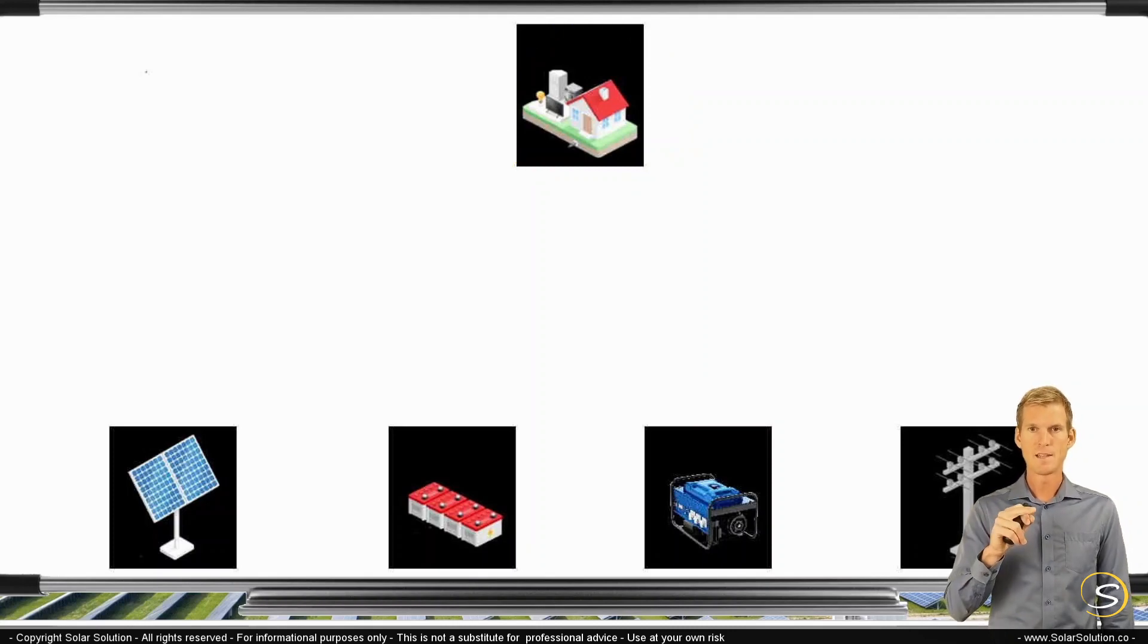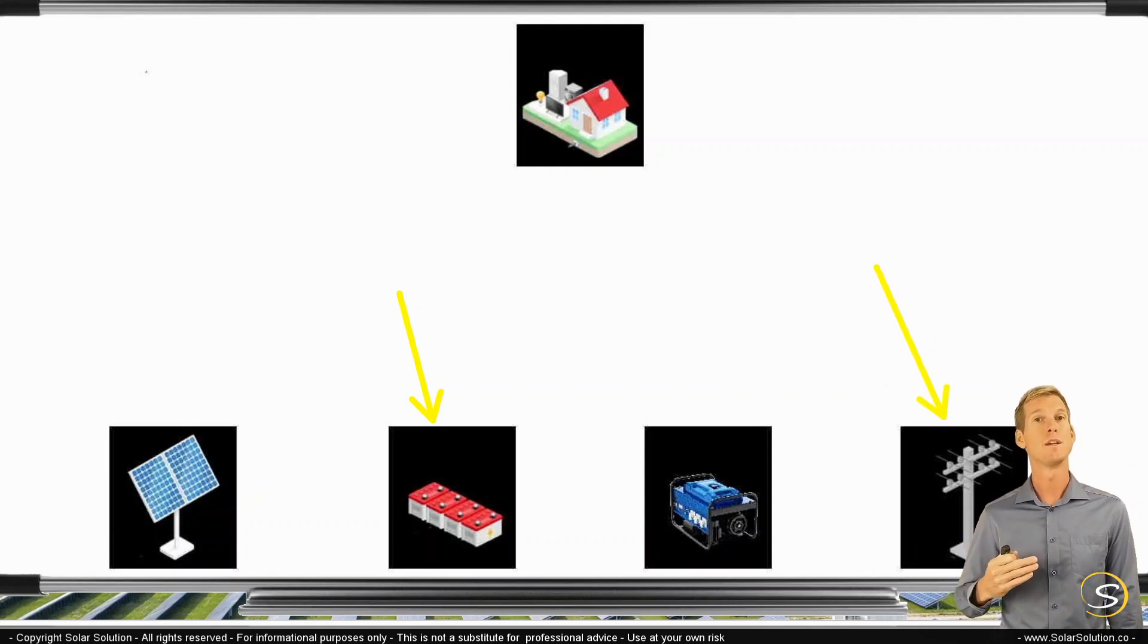Now, realize that two of the four power producers can also be power consumers, right? Your batteries can also be a power consumer when they are charged. And the grid can also be a power consumer if you have an excess amount of solar power and you choose to feed it back into the grid.